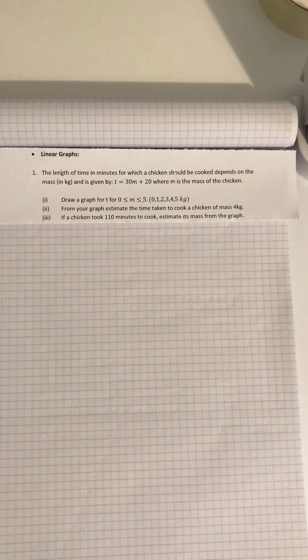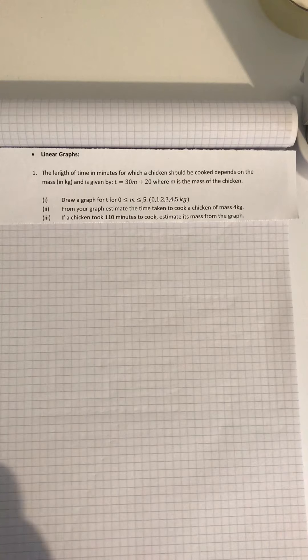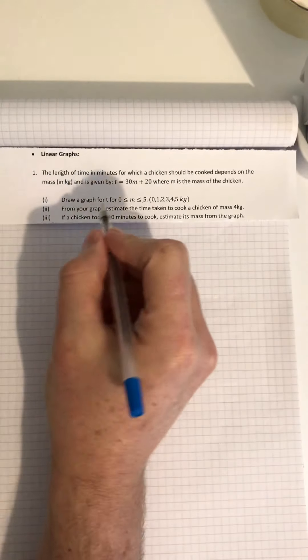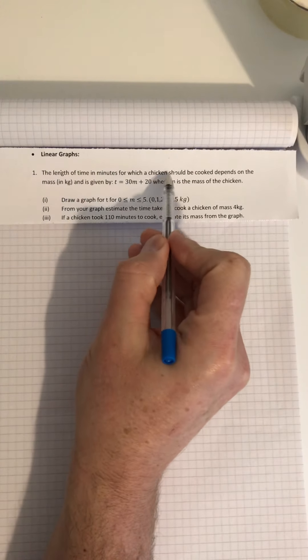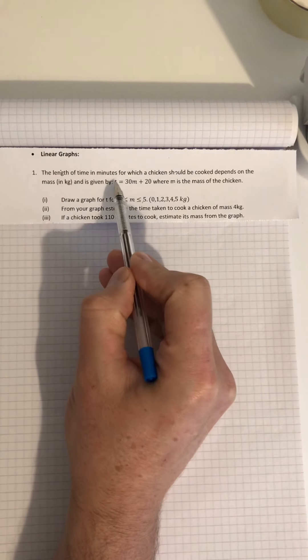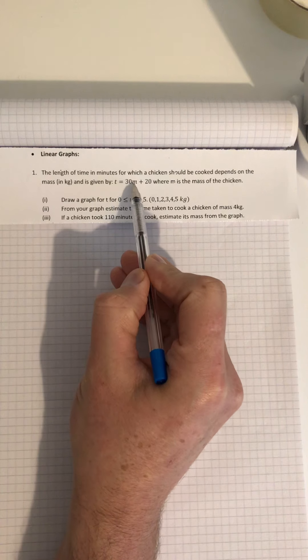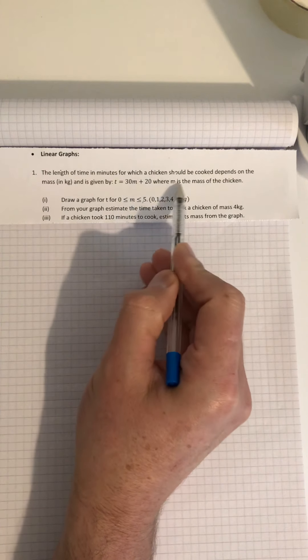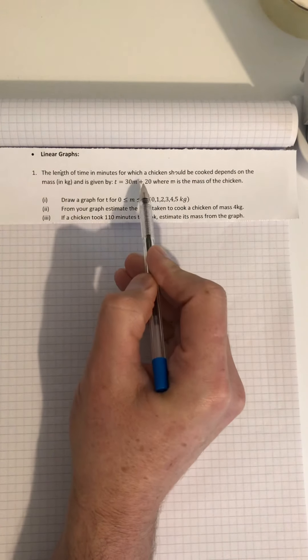Here's an example of a linear graph used in the real world. The length of time in minutes for which a chicken should be cooked depends on the mass - the weight of the chicken in kilograms. It's given by the formula: time equals 30 times m, where m is the mass or weight of the chicken, plus 20 minutes.